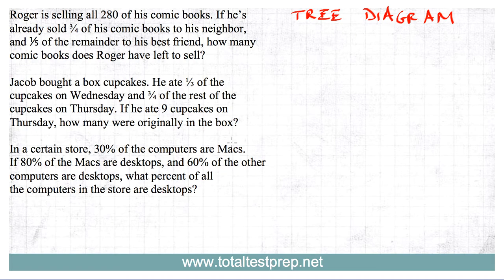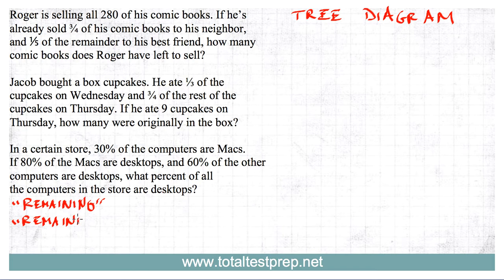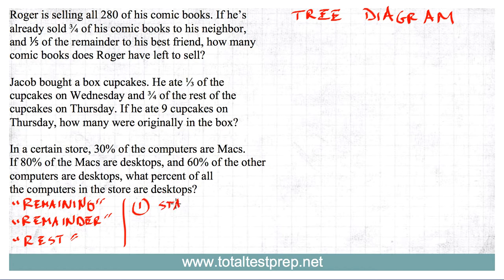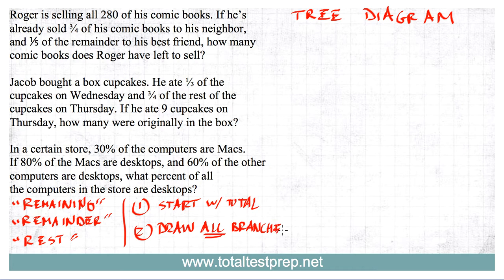Before we go through these questions, let's think about how do you know that this is the type of word problem for which to make a tree diagram. It's actually very straightforward. If you have a fractions and percents word problem and you see the keywords 'remaining,' 'remainder' — not a remainder from number properties, but a word problem with fractions and percents — or 'rest of,' you're most likely dealing with a question where it's best to tackle it with a tree diagram. You start with the total at the top and then draw all the branches.